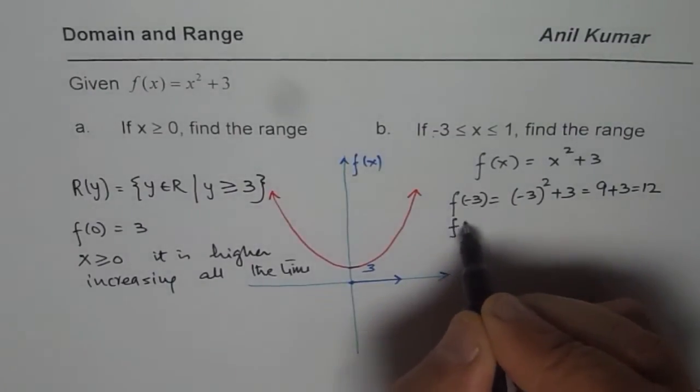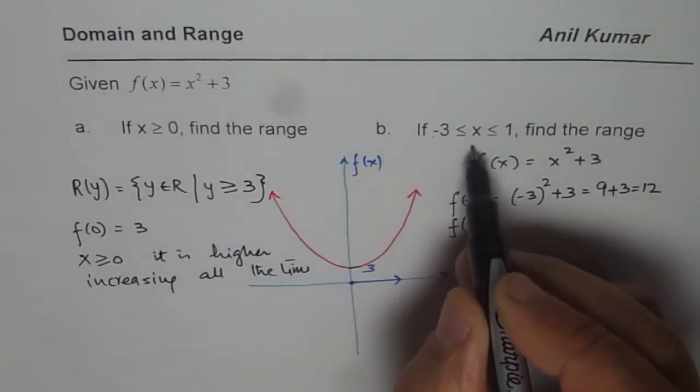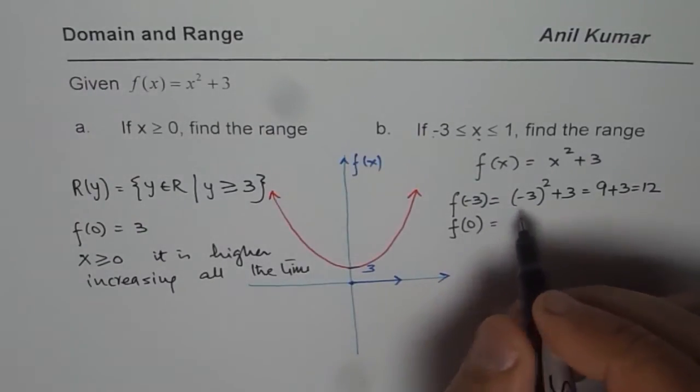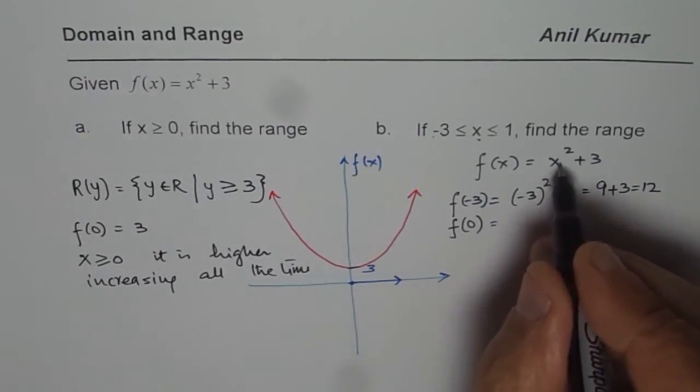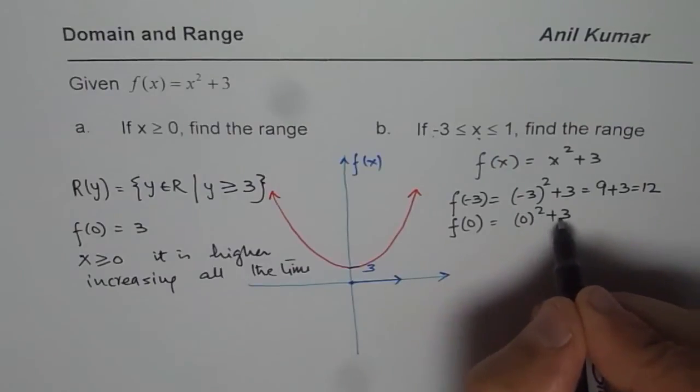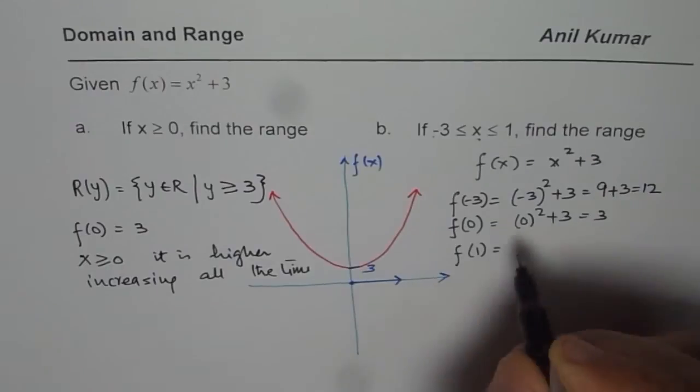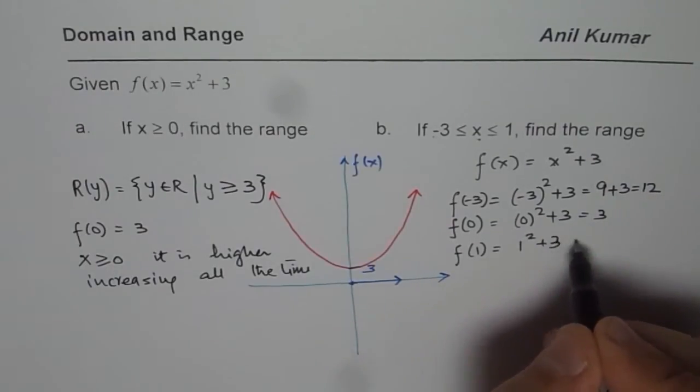If I write f of 0, since I know the minimum value of this function is 3, or when x is 0, if I write 0, I get 0 square plus 3, and that gives me 3. And for 1, the value is 1 square plus 3, or 4.